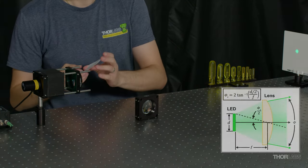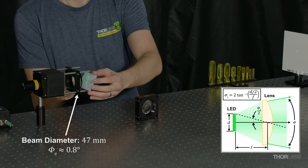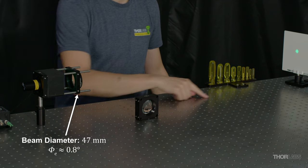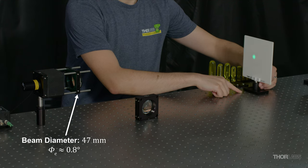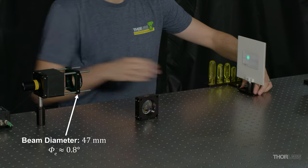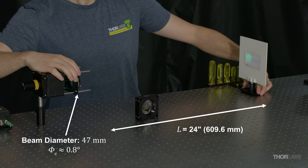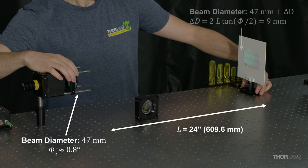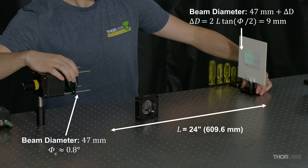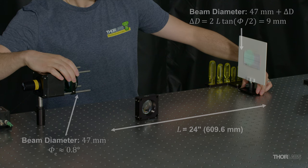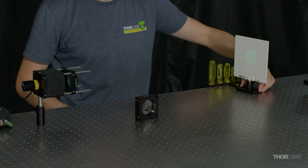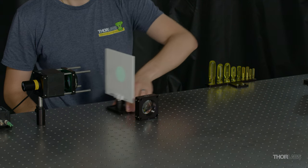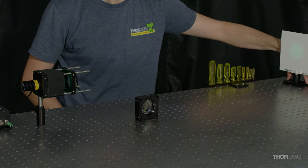With this 100 millimeter focal length lens, I expect a divergence of about 0.8 degrees. This means that over the same 24-inch distance from the output of the lens, the beam size should increase by about 8.5 millimeters. By moving the viewing screen back and forth, I can see that the collimated beam diameter remains more constant over the distance of my workspace, which also means the irradiance is more consistent.